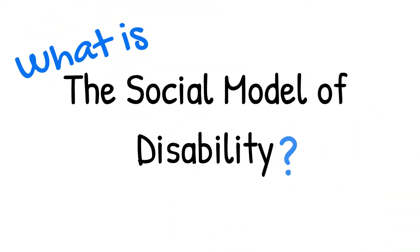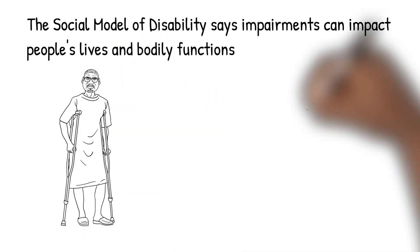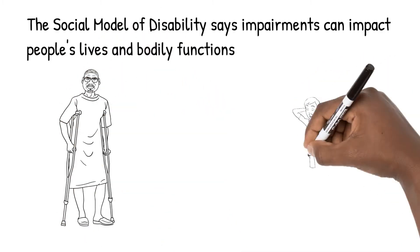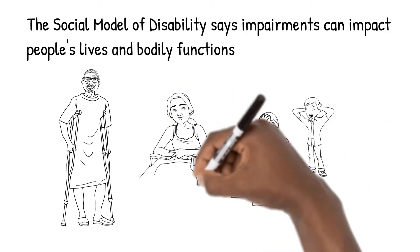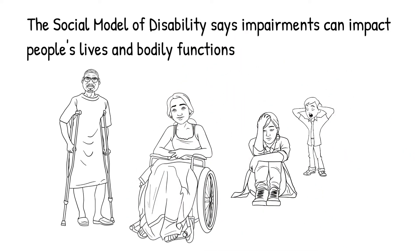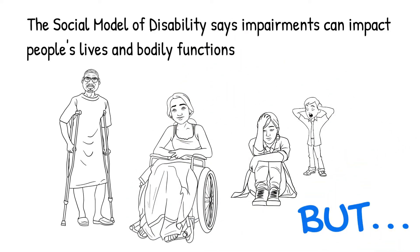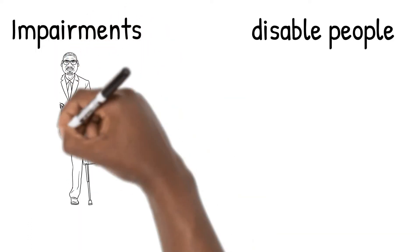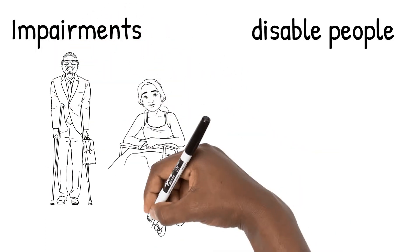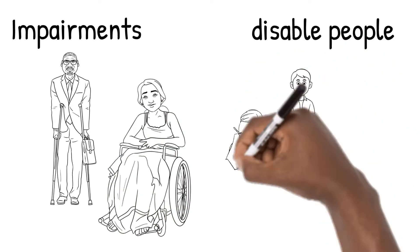What is the social model of disability? Images of disabled people are shown. The social model of disability says impairments can impact people's lives and bodily functions, but impairments do not disable people.